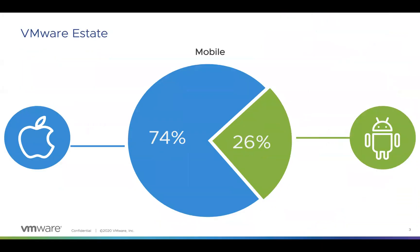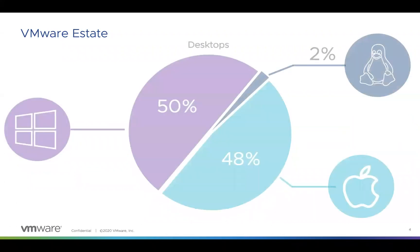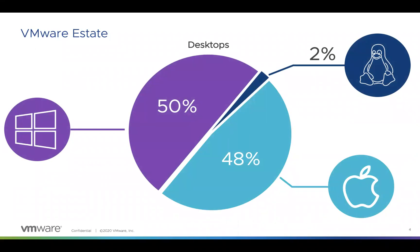To talk about where we are, I want to first show you what VMware looks like and where we're managing our devices. Today we have a bunch of mobile devices inside of VMware, both iOS and Android. We are about 75% iOS and about 25% Android. Most of the iOS devices are bring your own device — employee-owned devices inside of our Workspace ONE environment. On the desktop side, we're about 50% Windows, 48% Mac, and 2% Linux.